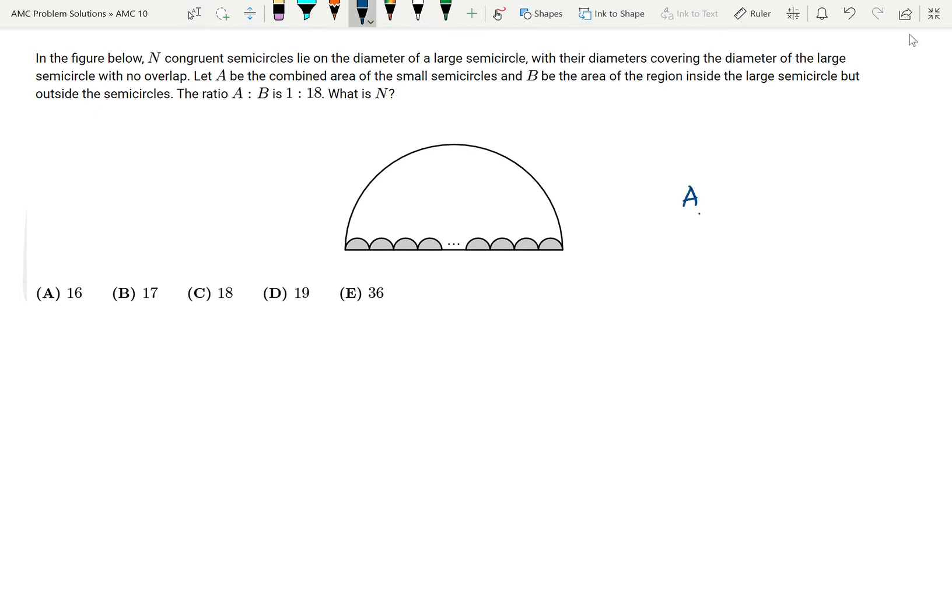So I know that A over B is equal to 1 over 18. I'm going to start by trying to find out what the area of the whole large semicircle is and then the area of the several small shaded semicircles.